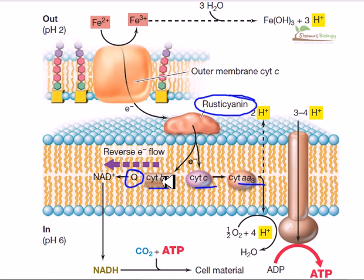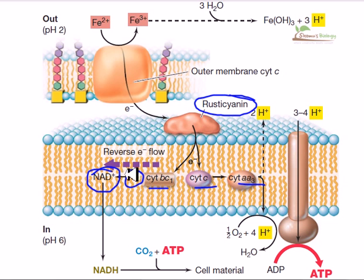The similar components involved are the cytochrome BC1, cytochrome C, and cytochrome AA3 complexes, along with mobile carriers like quinones. In the case of sulfur bacteria, before the mobile carriers we have FAD+, which helps to reduce NAD+. In this case of iron-oxidizing bacteria, we also witness reverse electron flow, but the reverse electron flow here is from quinones to NAD+.